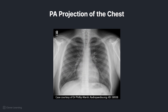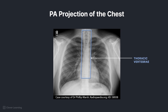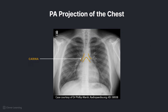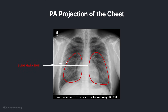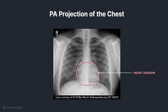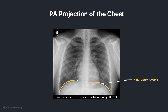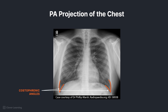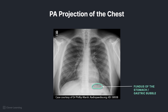Now let's discuss the anatomy visualized on the PA chest. Beginning at the superior portion of the chest, we see the air-filled trachea at midline, apices of the lungs, clavicles, thoracic vertebrae, aortic arch, carina or tracheal bifurcation, pulmonary markings, heart shadow, right and left hemidiaphragms, and costophrenic angles. Also present is the gastric bubble in the fundus of the stomach.